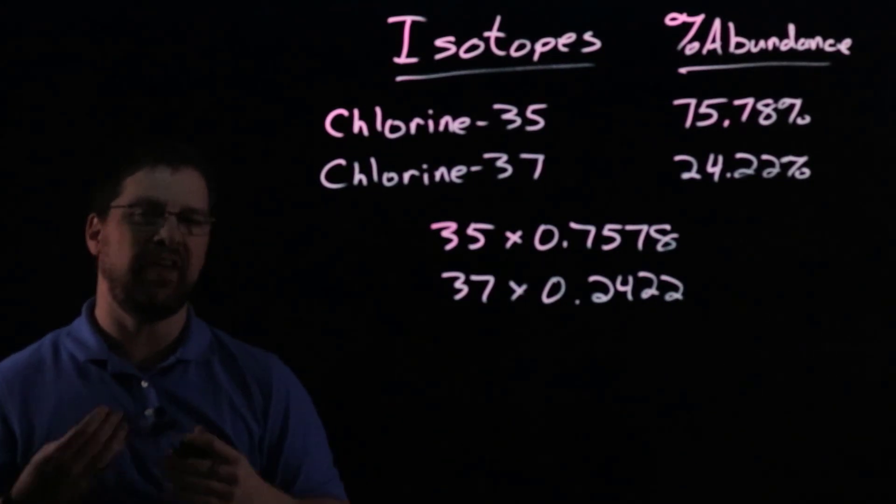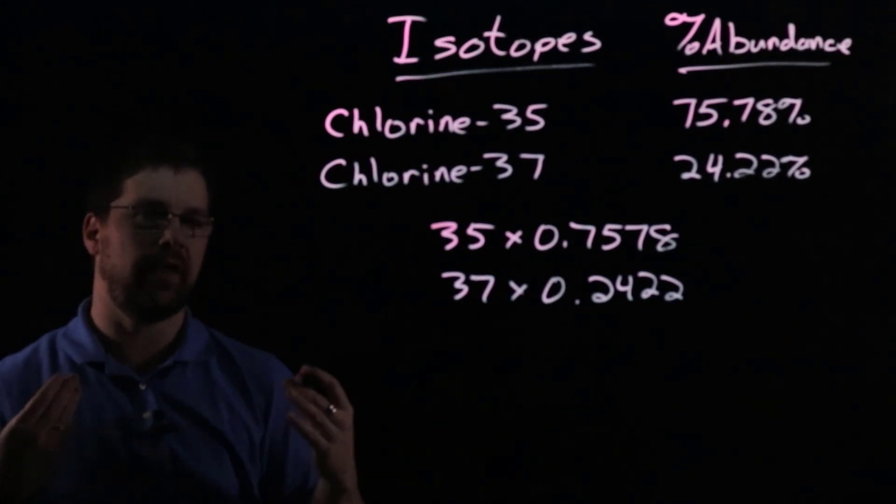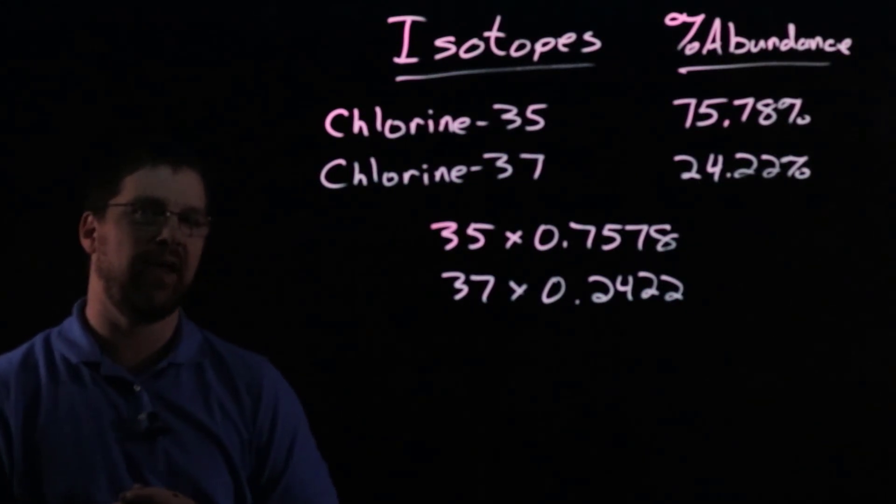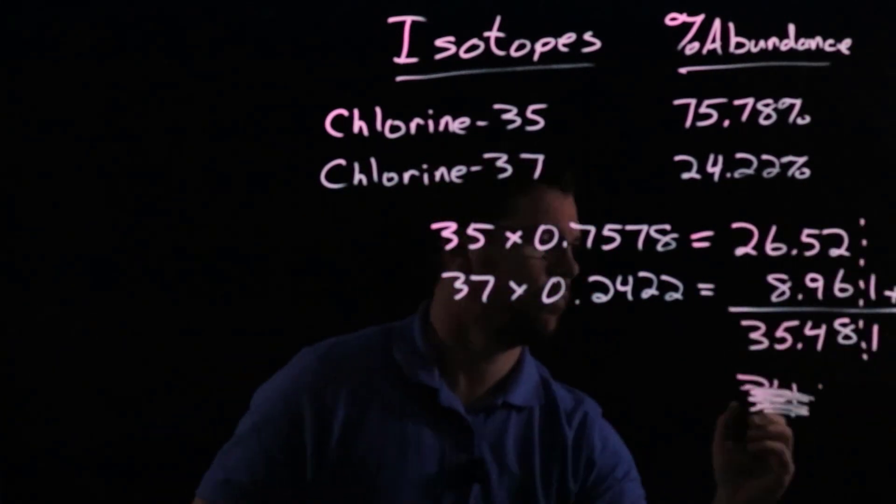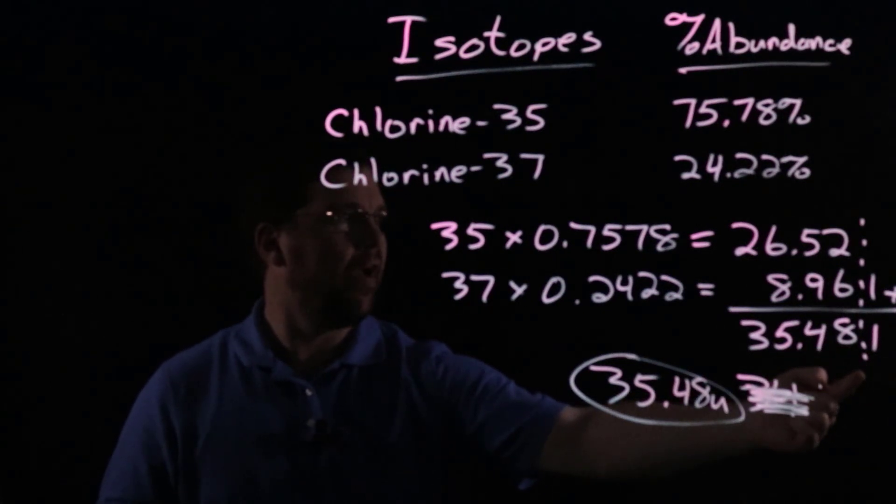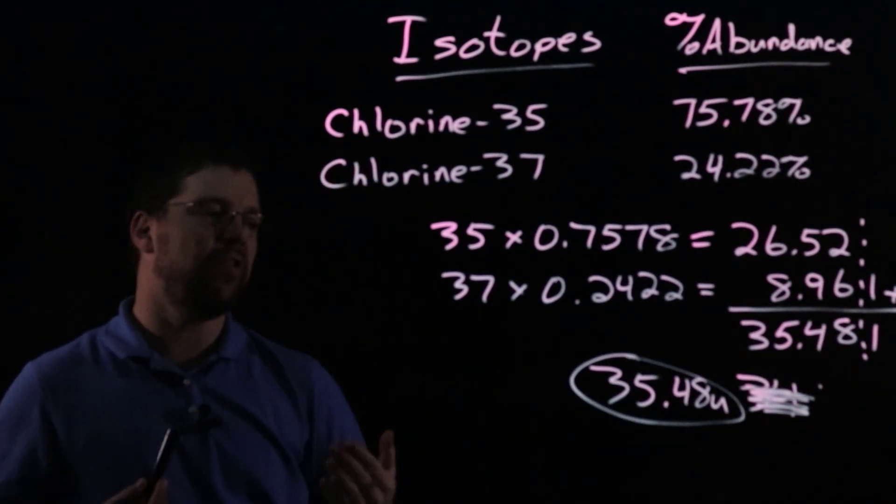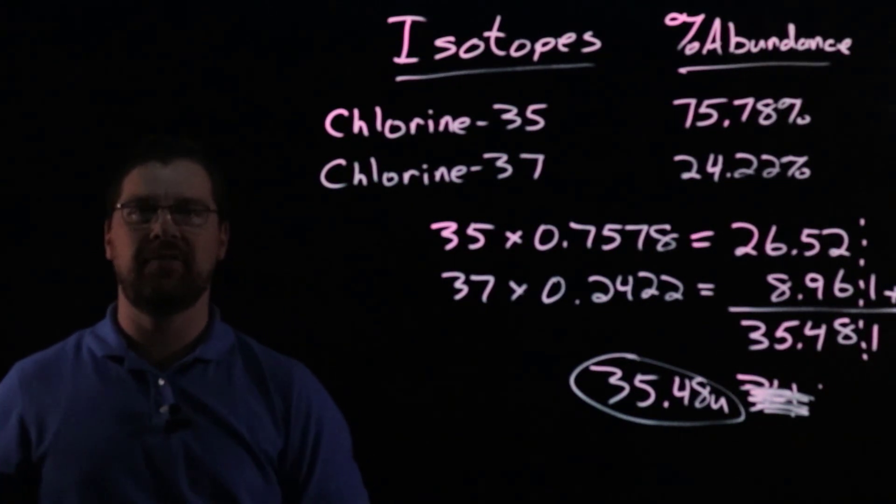and then we'll take into account our sig figs for the addition, and we should come up with our final average atomic mass. So when we look for proper sig figs, we're going to round off to the nearest hundredth. So we get 35.48 U, and the U simply stands for atomic mass units. That's a mass scale that we use when we're talking about very tiny particles like atoms or molecules.